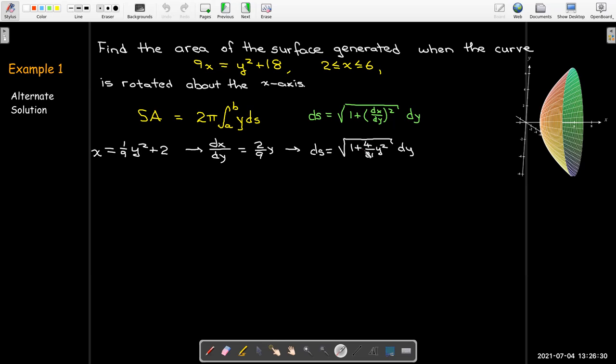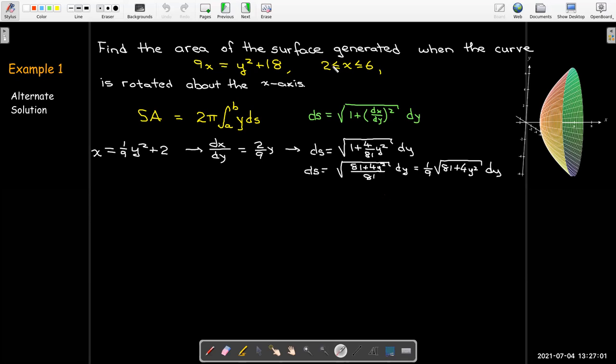So calculate ds: 1 plus (dx/dy)² under the radical. Let me do some algebra inside the radical, write it as a single fraction. Since 81 is a perfect square, let me factor out 1/81. So I get 1/9 √(81 + 4y²) dy for my ds expression. I'm not doing any integration yet, but I do need to change these x bounds into y bounds. So when x equals 2, I'll get y equals 0. And if I put in x equals 6, I'll find that y equals 6.